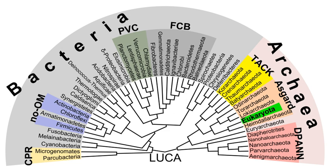Some prokaryotes, such as cyanobacteria, may form large colonies. Others, such as myxobacteria, have multicellular stages in their life cycles. Molecular studies have provided insight into the evolution and interrelationships of the three domains of biological species. Eukaryotes are organisms, including humans, whose cells have a well-defined membrane-bound nucleus and organelles. The division between prokaryotes and eukaryotes reflects the existence of two very different levels of cellular organization.